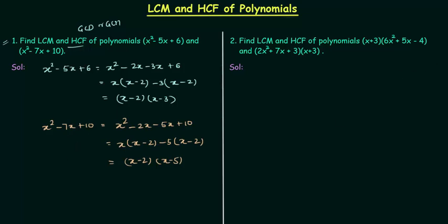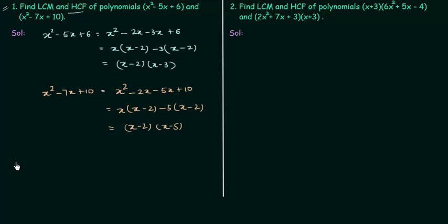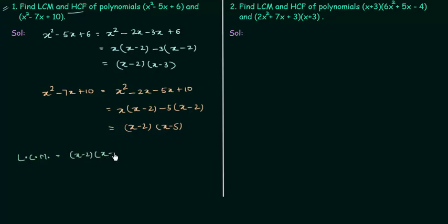Now we will find out LCM and HCF using the prime factorization method. In this method, LCM is equal to the product of factors with the highest index. So we first find out the factors. The factors present are (x - 2), (x - 3), and (x - 5).